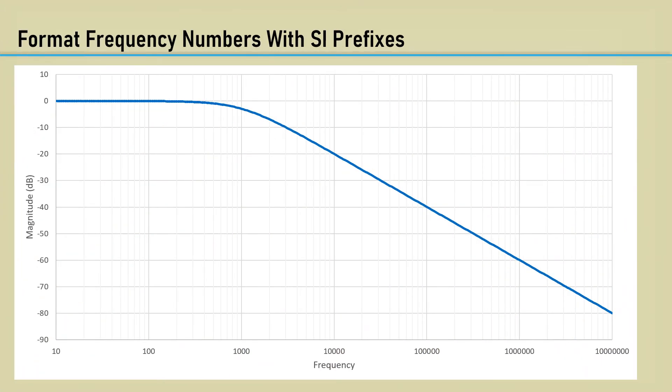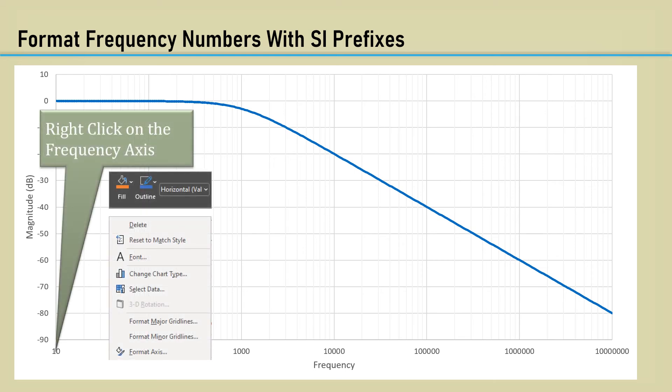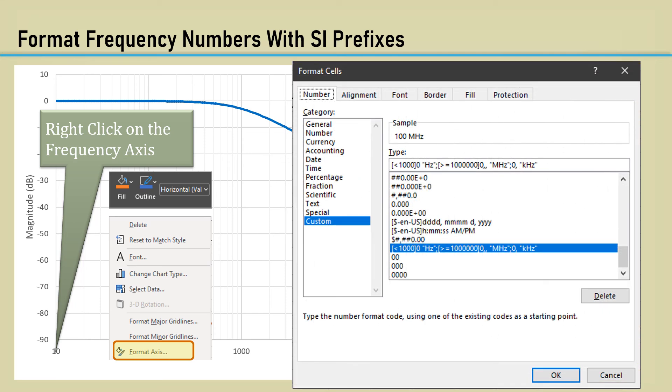To apply this number format, right-click on the frequency axis to get the context menu. Select Format Axis, and select the Number tab, and set the category to Custom. Then enter the code in the Type field.